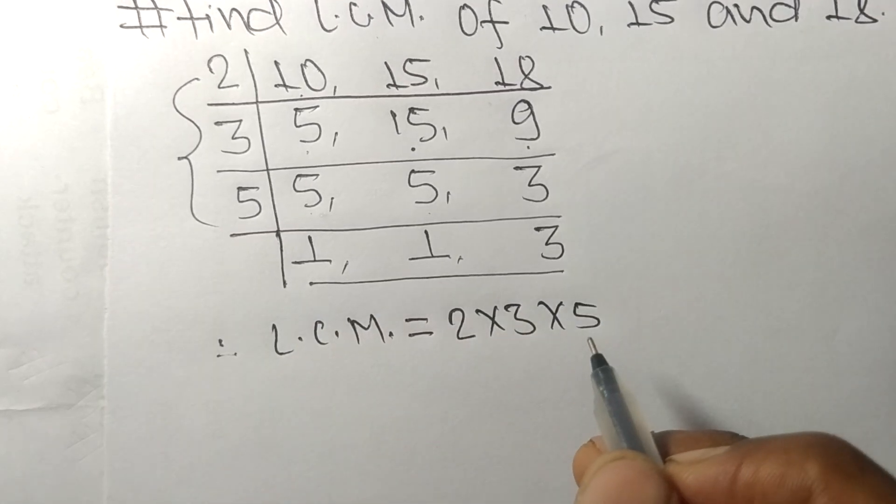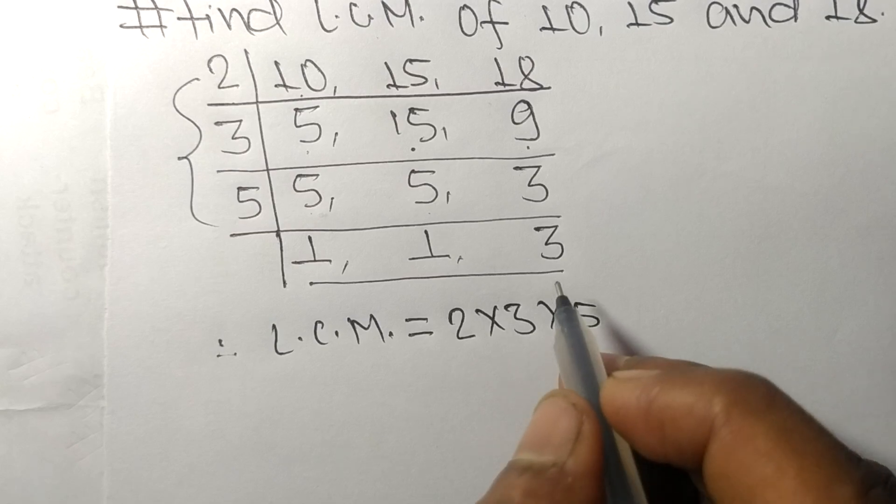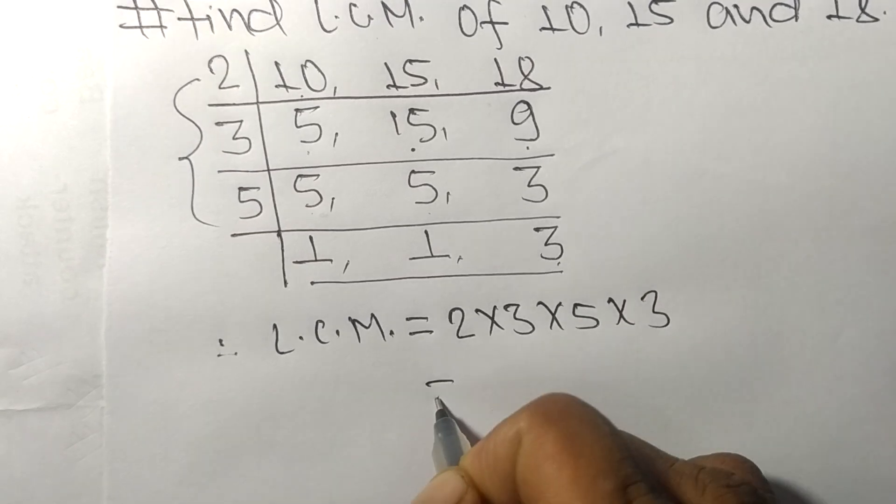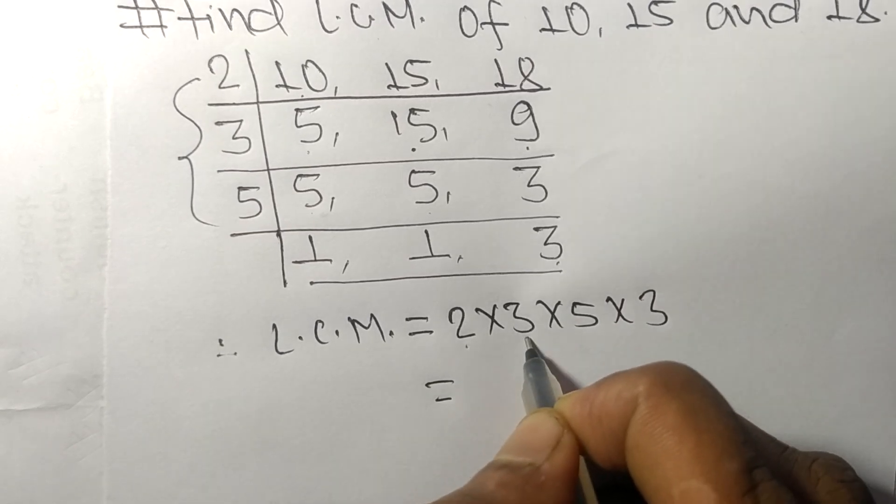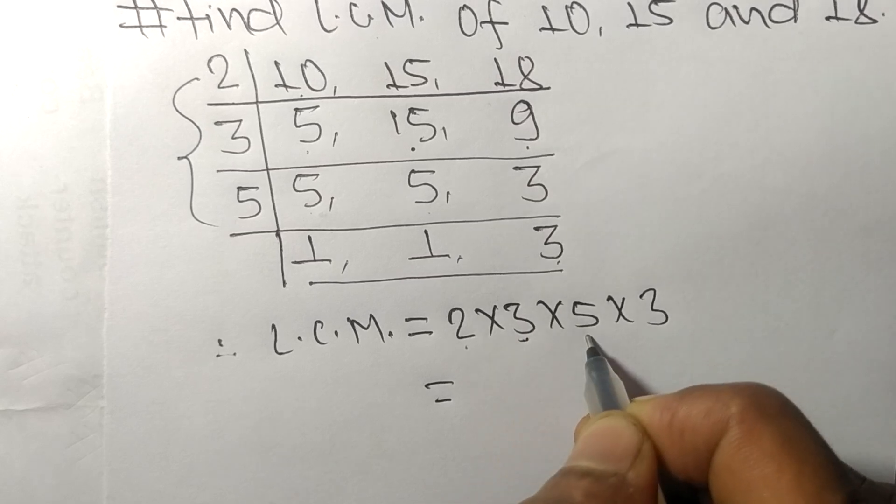2 times 3 means 6, 6 times 5 means 30, 30 times 3 means 90.